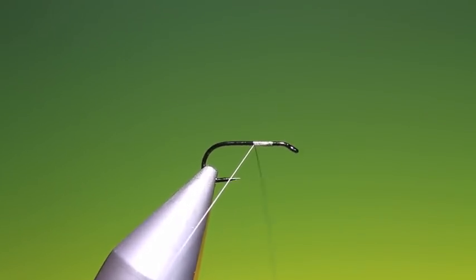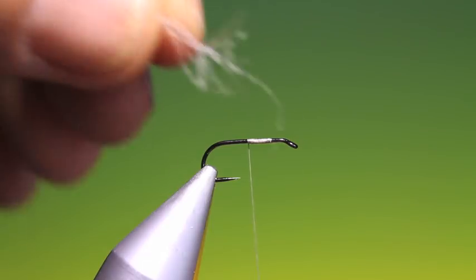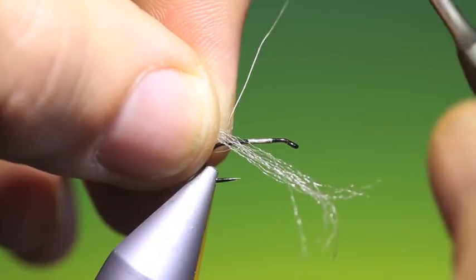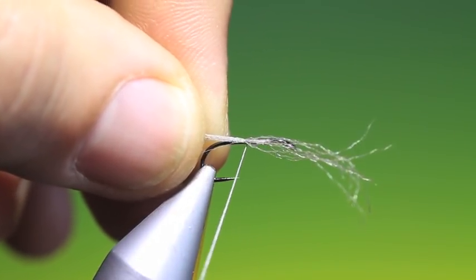We'll just put a bit of tying thread on about halfway, then just a few strands of Xelon. This is for the trailing shuck.